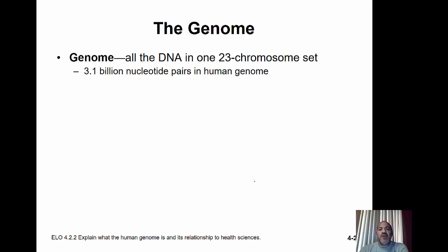The genome is all of the DNA contained in one complete set of chromosomes, found to be about 3.1 billion nucleotide pairs in the human genome. We need to explain what the genome is and how it relates to health sciences — why does it matter how many genes we have or what they are?